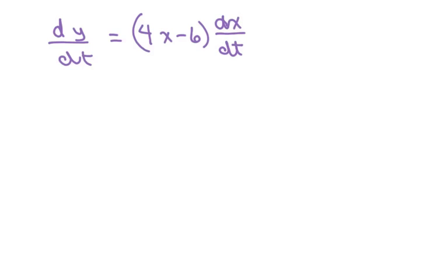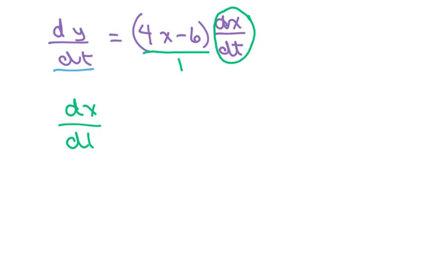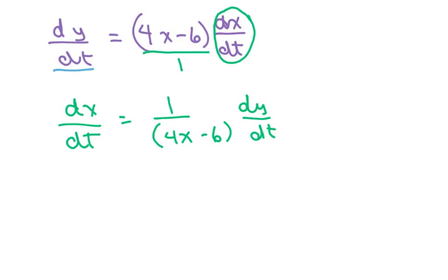We've already solved for the derivative of y with respect to t. We also want to solve for the derivative of x with respect to t because we have two problems to do. If I cross multiply, I get the derivative of x with respect to t equals 1 over (4x minus 6) times the derivative of y with respect to t.